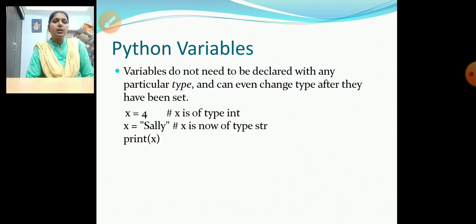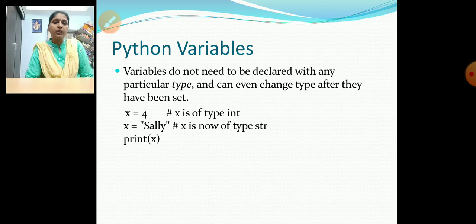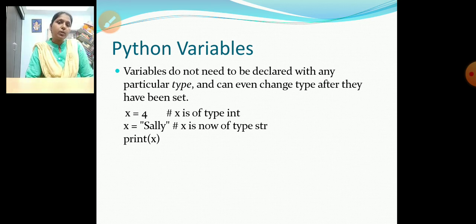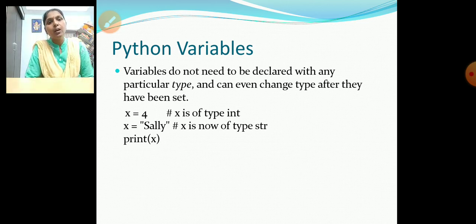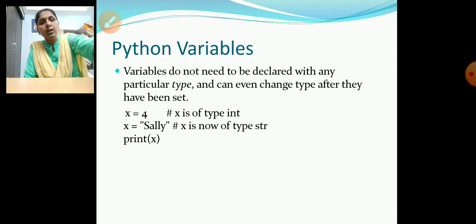In Python, we need not declare any type. We can even change the type after it has been set. For example, if x = 4 and then x = 'Sally', x was integer and now becomes string type automatically. The output shows x value as the second one, Sally.